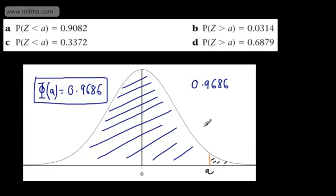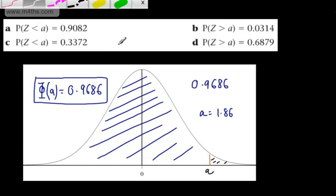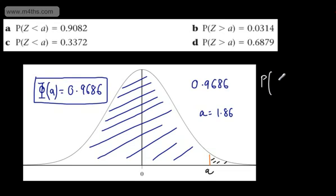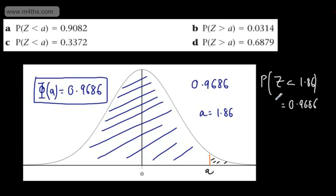So A is going to be equal to 1.86. Taking it back to the last video, you could say the probability of Z being less than 1.86 standard deviations above the mean is going to be equal to 0.9686. Or alternatively, the probability of Z being greater than 1.86 standard deviations above the mean is equal to 0.0314.